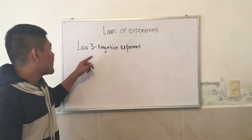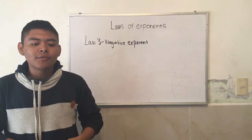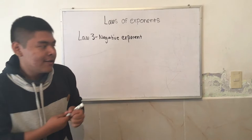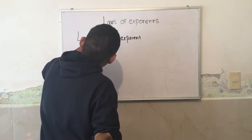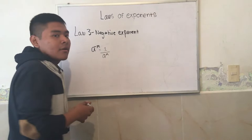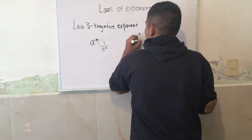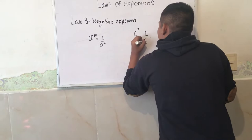Law 3: negative exponent. Since the exponent is negative, the result will be a fraction, where the potency will be the denominator. That is, A to the minus M equals 1 over A to the M. For example, we have 6 to the minus 2 equal to 1 over 6 to the 2.